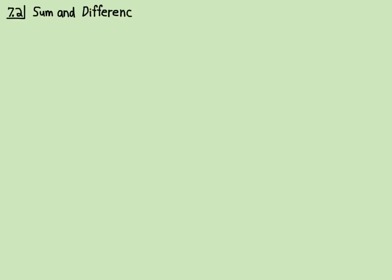So section 7.2 is on some sum and difference trig identities.